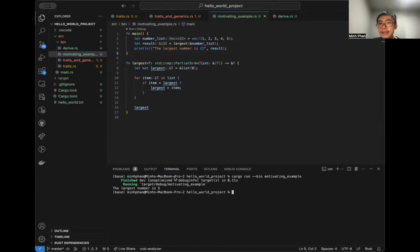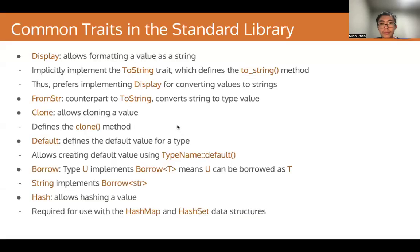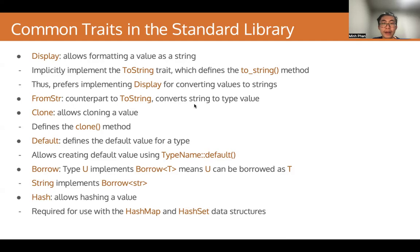There are a couple of common traits in the standard library that you will want to know about. First, we have the Display trait that we already introduced — this trait allows formatting a value as a string. This trait actually implicitly implements the ToString trait, which defines the to_string method that you may be familiar with. When you want to convert a value of a struct or enum into a string, prefer implementing Display. We also have the FromStr trait, the counterpart to ToString, which allows us to convert a string to our type. We also have the Clone trait, which allows cloning a value and defines the clone method — so if you want to clone some value of a generic type, you need to specify the Clone trait bound.